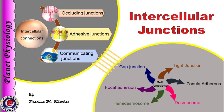In the previous video we have seen that various cell adhesion molecules play an important role in adhering cells to each other as well as to the basal lamina. These adhesion molecules form various types of cell junctions which impart them specific functions. Today we shall learn about intercellular junctions.